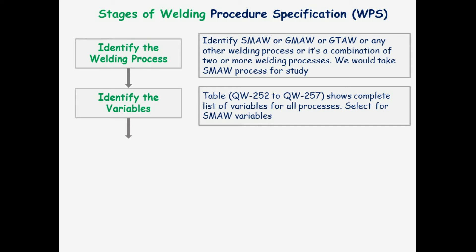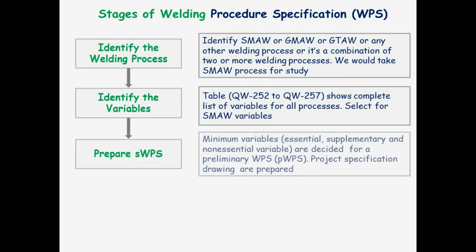Now, prepare the preliminary WPS (PWPS). The minimum variables — which are essential, supplementary, and non-essential variables — are decided for a preliminary WPS. Project specification drawings are also prepared.